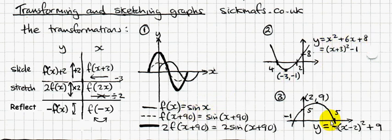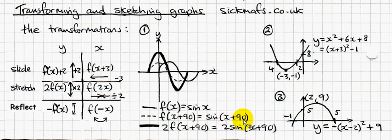Any graph is basically a function. So if I add 90 inside the function, the input is inside the bracket. So adding 90 to the input looks like f(x + 90) — before the input was just x, now it's x + 90, so you write it like that.